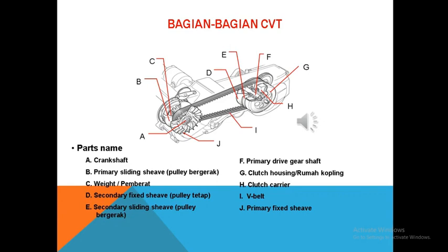Yang berikutnya adalah Good Housing atau Rumah Coupling. Rumah Coupling di sini berfungsi untuk meneruskan putaran dari puli sekunder ke roda belakang. Selain itu, Clutch Carrier di dalam sistem transmisi otomatis berfungsi untuk meneruskan putaran dari puli sekunder dengan cara menekan pada good hose.